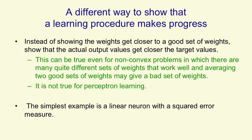The simplest example of learning in which you're making the outputs get closer to the target outputs is learning in a linear neuron with a squared error measure.